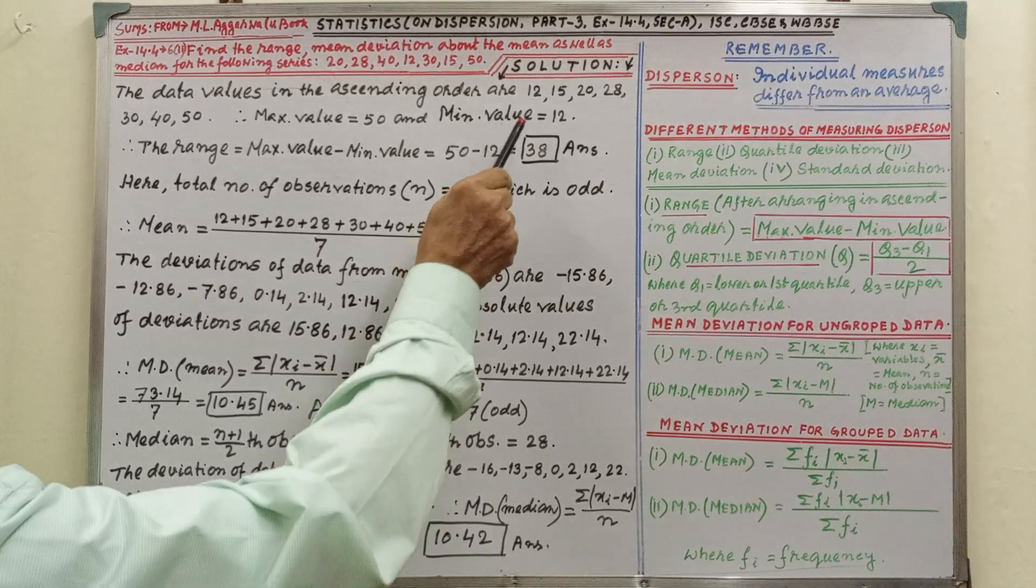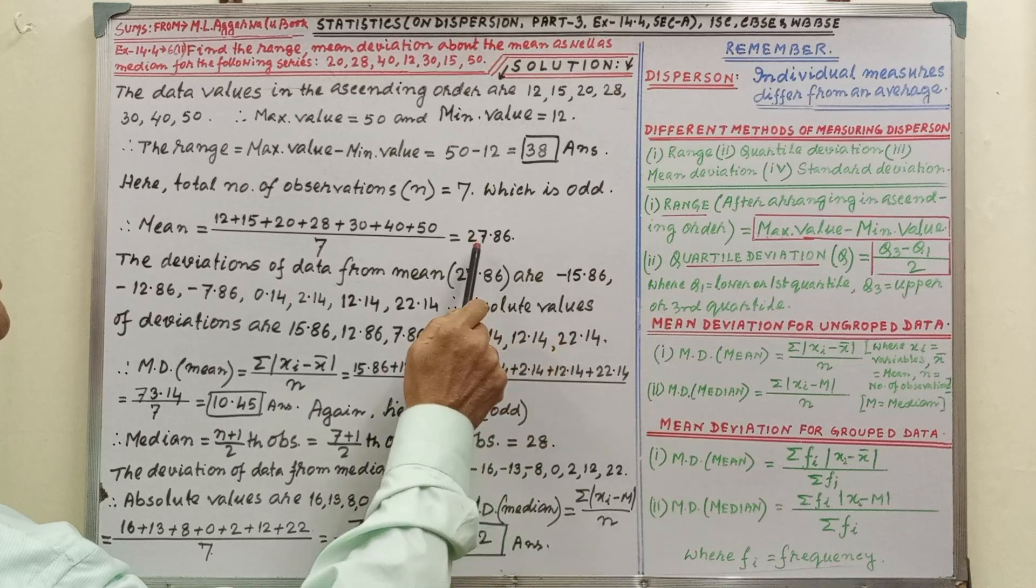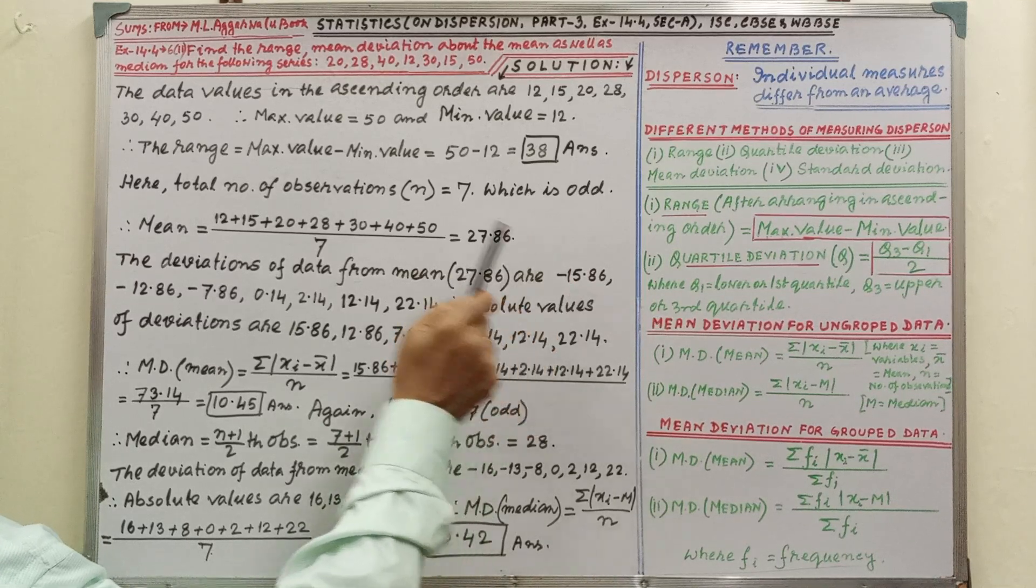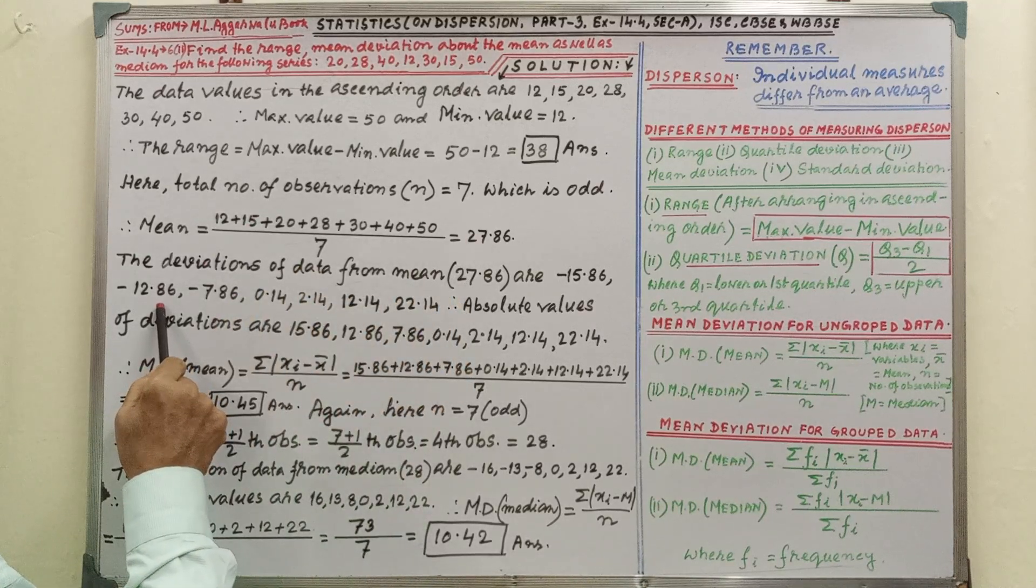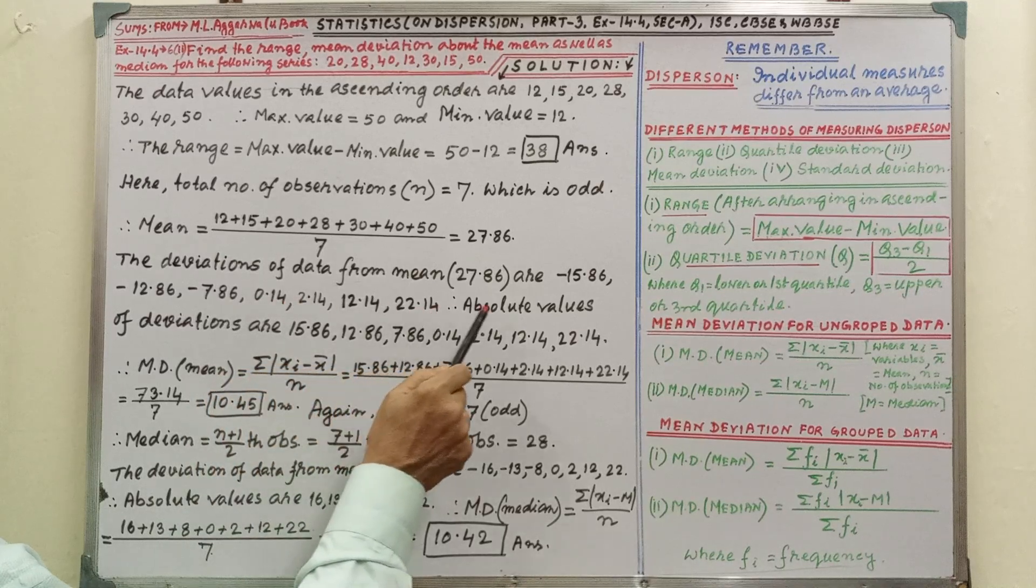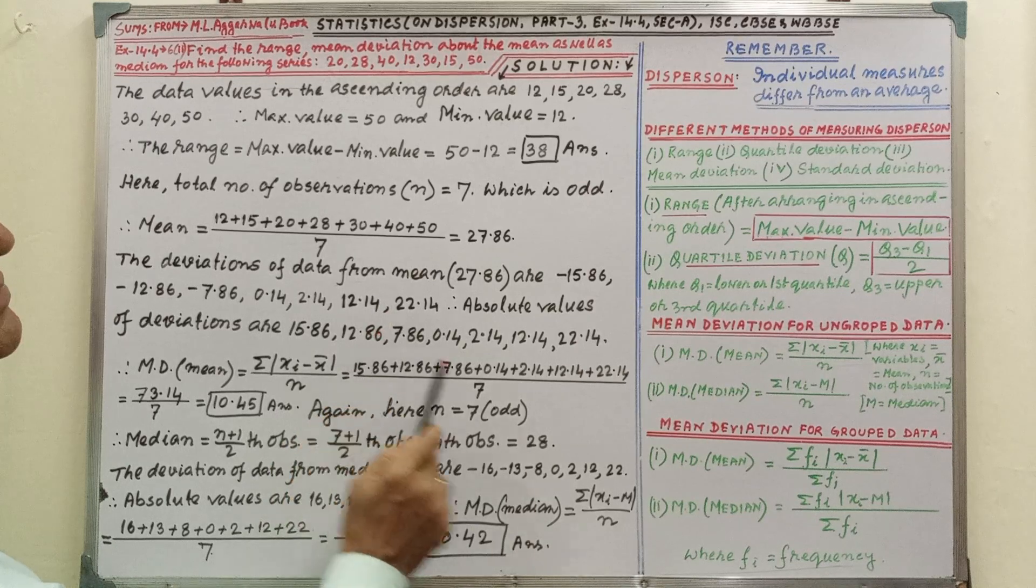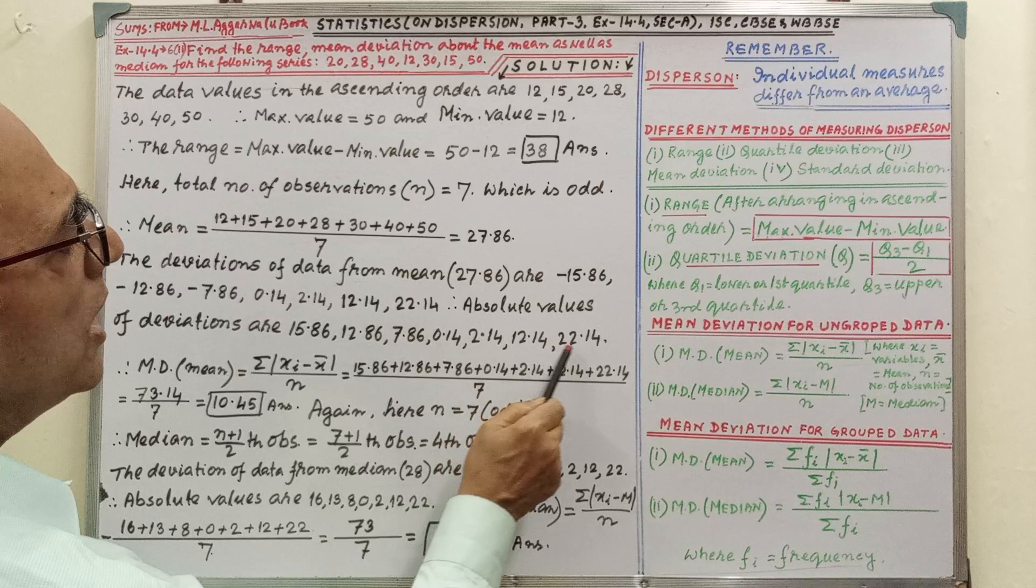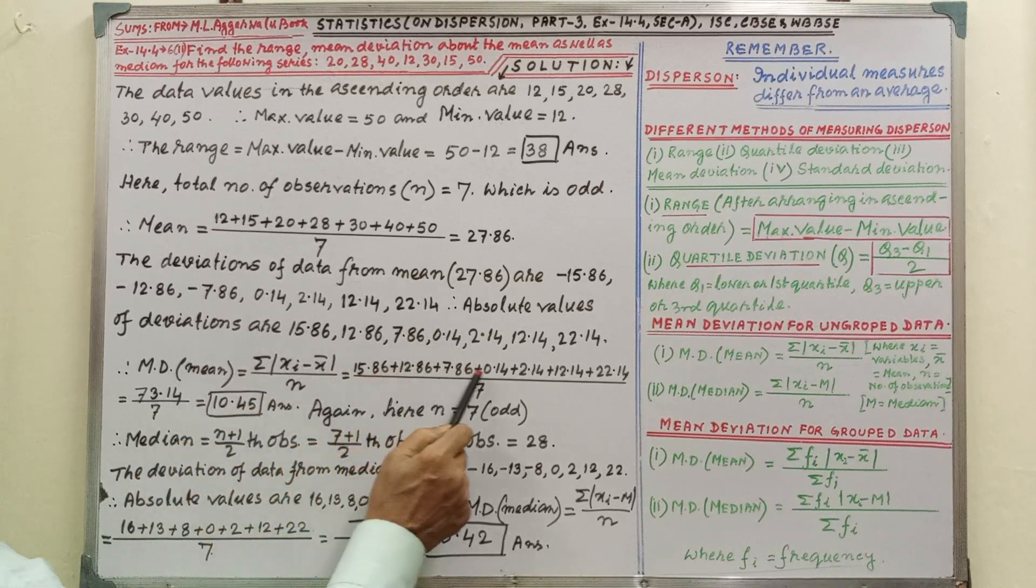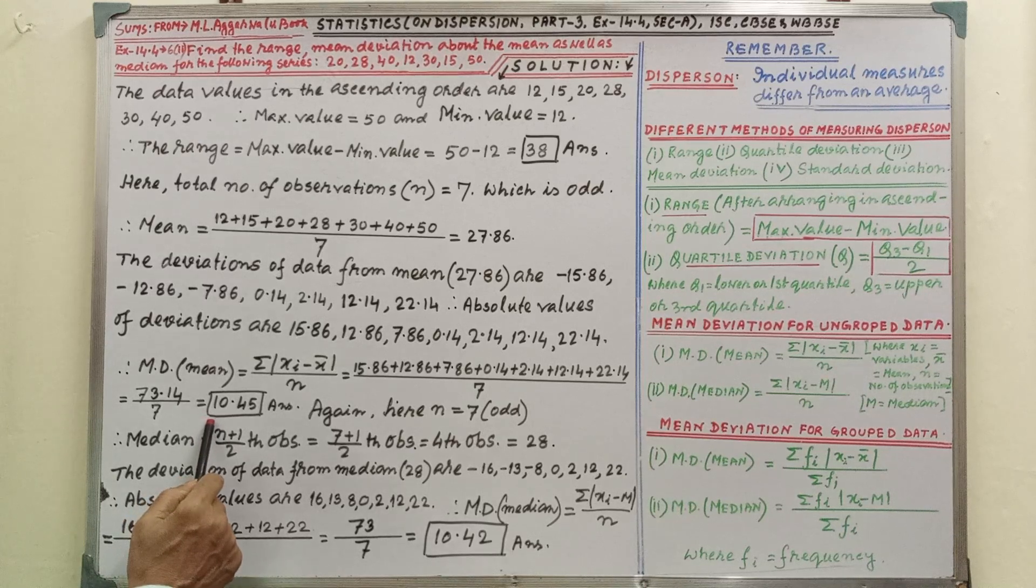This is the mean and these are the data. The deviations of data from the mean, by calculation we are getting 6.45, this is the mean deviation of mean.